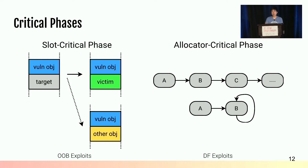We discovered that there are two types of critical phases: slot critical and allocator critical. A heap-based kernel exploit has a target slot that it needs to occupy to be successful. For example, in out-of-bounds access exploits, when the vulnerable object is allocated, the adjacent free slot becomes the target slot — if the target slot is accidentally occupied by other objects, the kernel might crash after the overflow. For exploits that corrupt the allocator, they need to restore the allocator back to its normal state. For example, in a double-free exploit, it wraps the linearly linked free list into a loop, and when the kernel tries to use the free list, it detects the anomaly and crashes. These are the phases when exploits can fail.